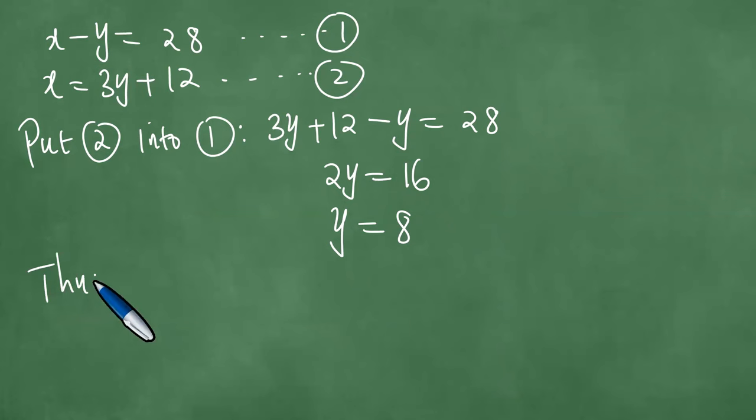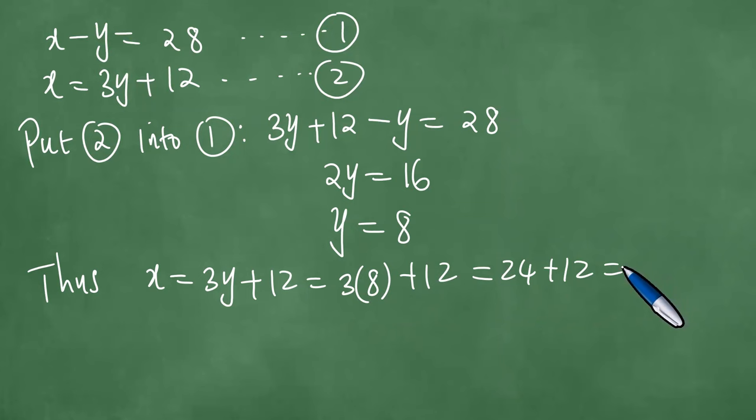Thus, we are interested in getting x. So x is 3y plus 12, which means that we have 24 plus 12. And 24 plus 12 is exactly 36.